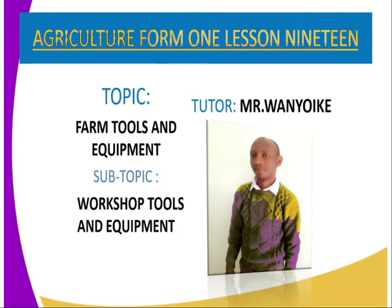From the previous lesson, we covered several of them, and we are on number six. The sixth one, we have the holding tools and equipment. Then the seventh category, we have the sharpening tools. And the next one, we will deal with the racking tools and equipment.